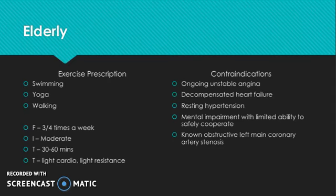Mental impairment with limited ability to safely cooperate is a relative contraindication — someone can't follow instructions, they might do it wrong and it could cause an injury, but it might not. Known obstruction of the left main coronary artery stenosis is also a relative contraindication — it can cause myocardial infarction and symptoms of angina, but not necessarily. That's just a possibility.